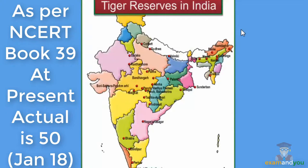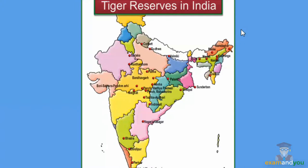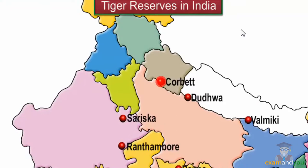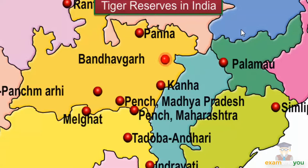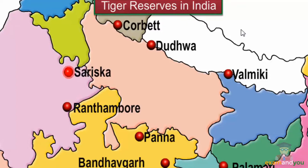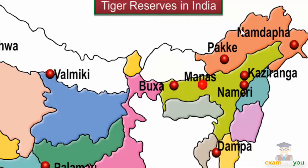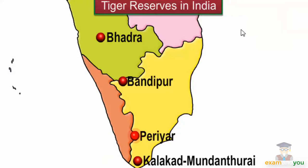Some of the main tiger reserves in India are: the Jim Corbett National Park in Uttarakhand, the Sundarbans National Park in West Bengal, the Bandhavgarh National Park in Madhya Pradesh, the Sariska Wildlife Sanctuary in Rajasthan, the Manas Tiger Reserve in Assam, and the Periyar Tiger Reserve in Kerala.